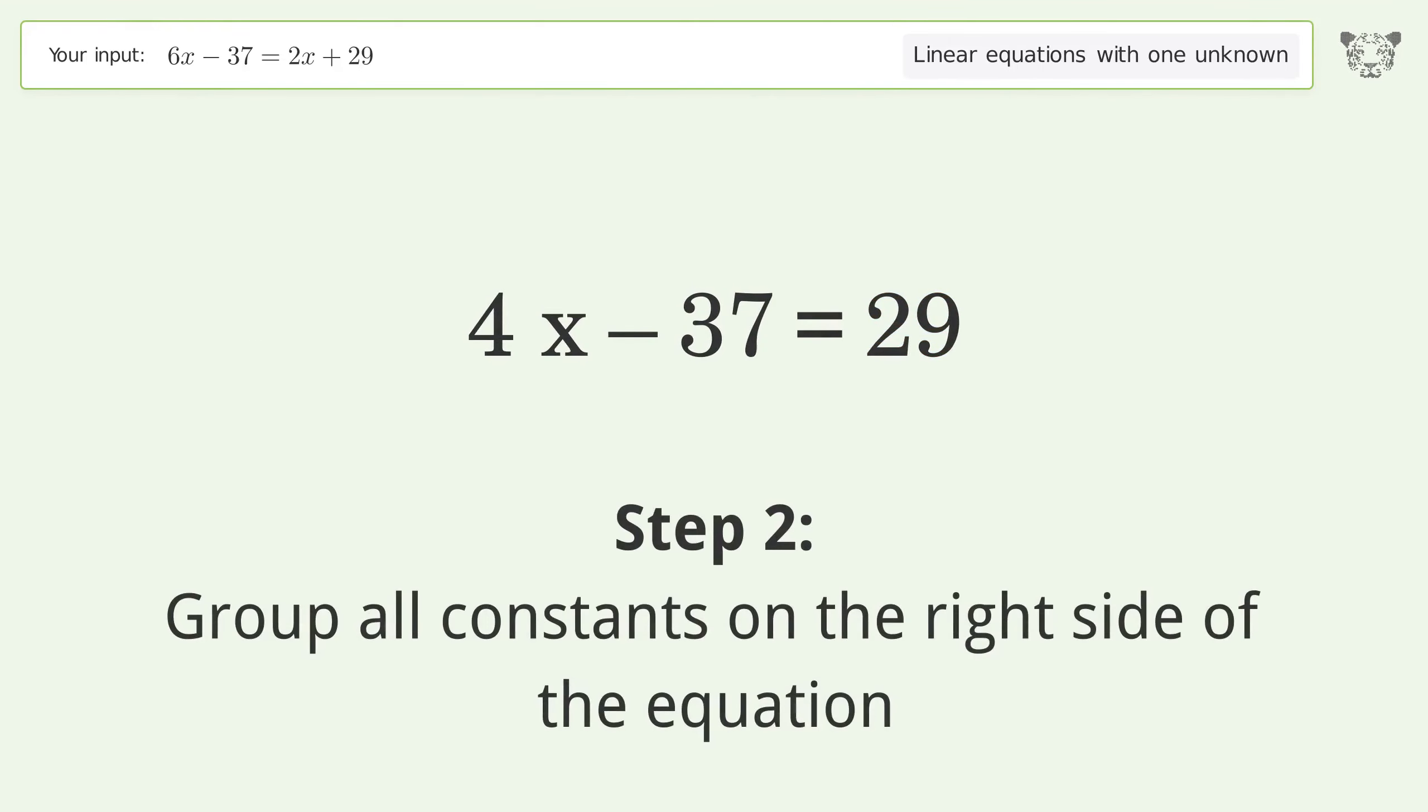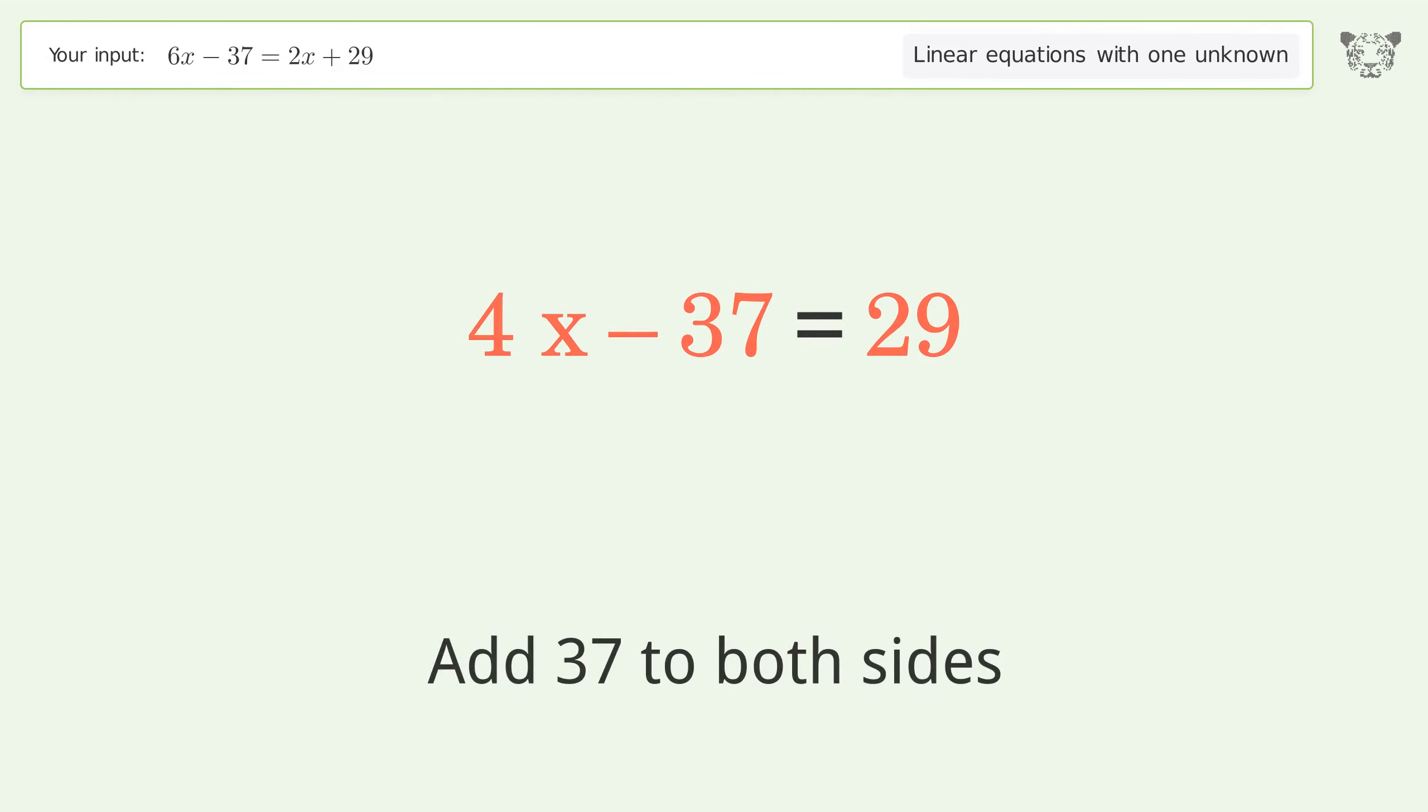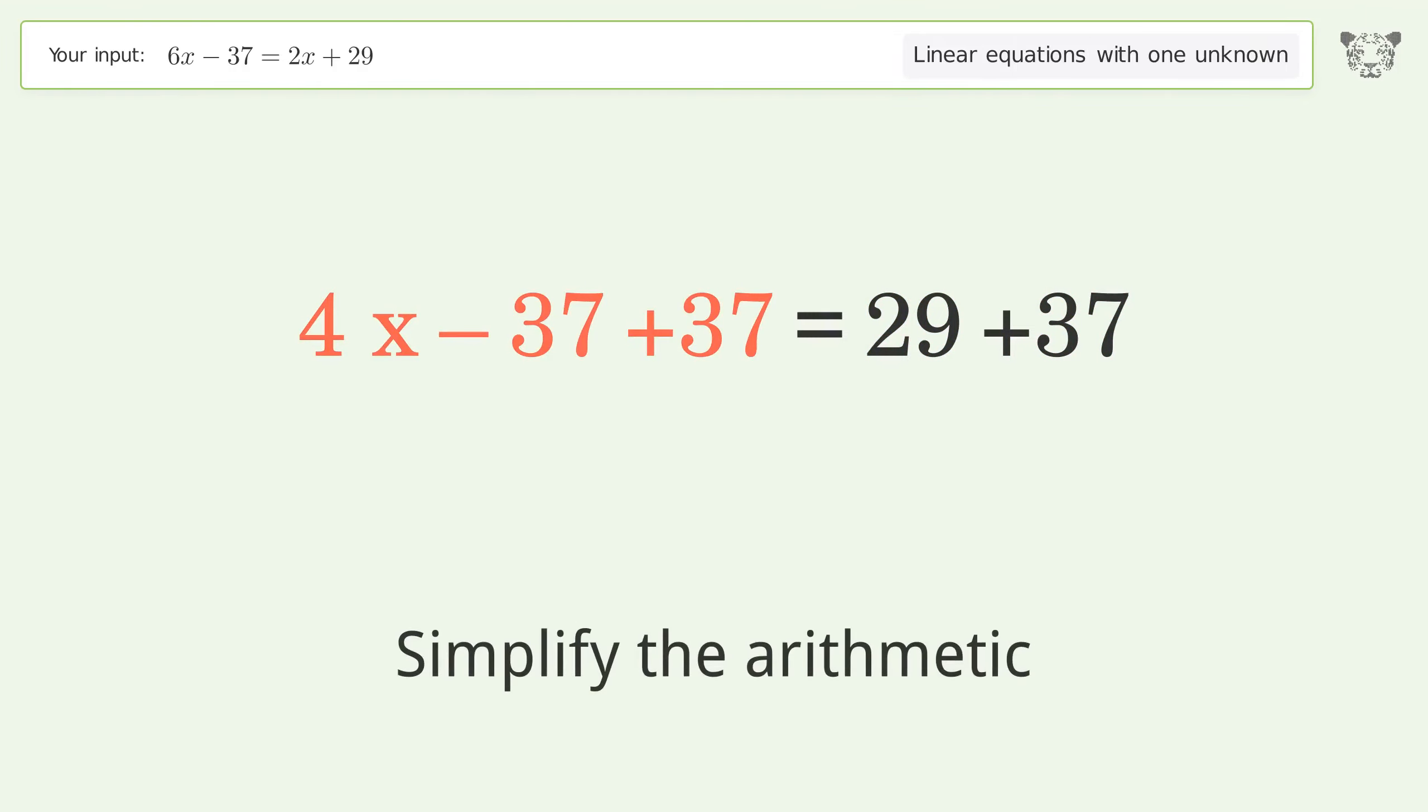Group all constants on the right side of the equation. Add 37 to both sides. Simplify the arithmetic.